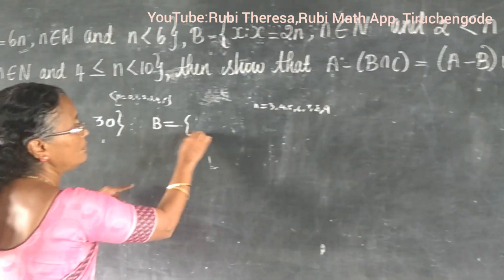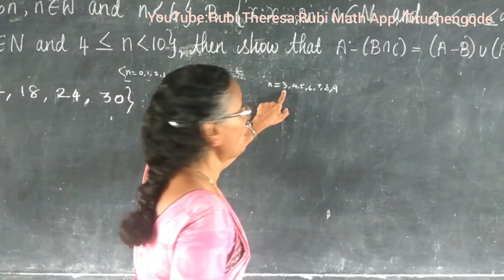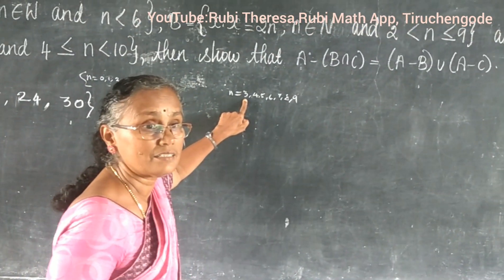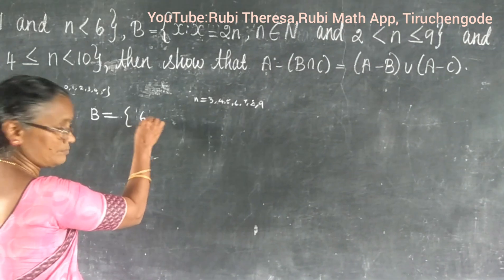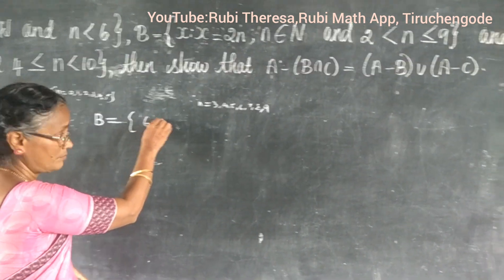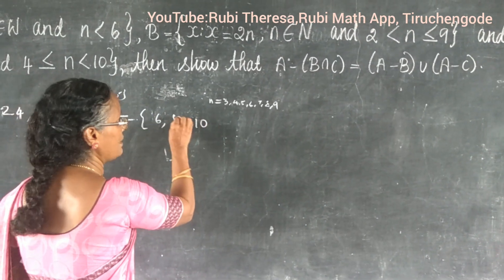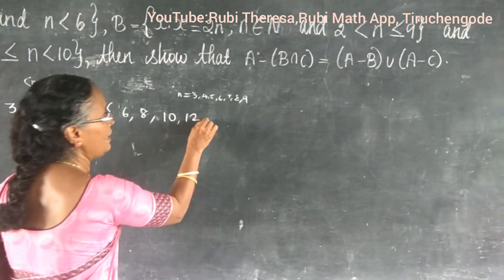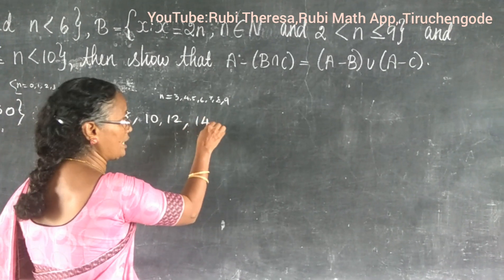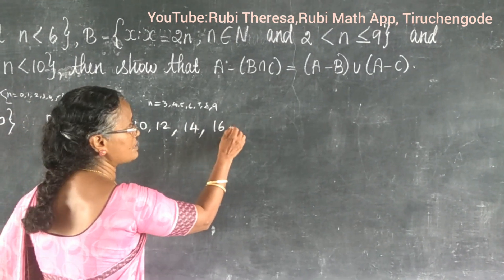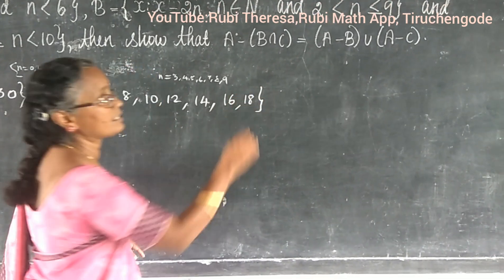Now compute the 2 times table starting from n equals 3: 2 times 3 is 6, 2 times 4 is 8, 2 times 5 is 10, 2 times 6 is 12, 2 times 7 is 14, 2 times 8 is 16, 2 times 9 is 18. So B equals {6, 8, 10, 12, 14, 16, 18}.